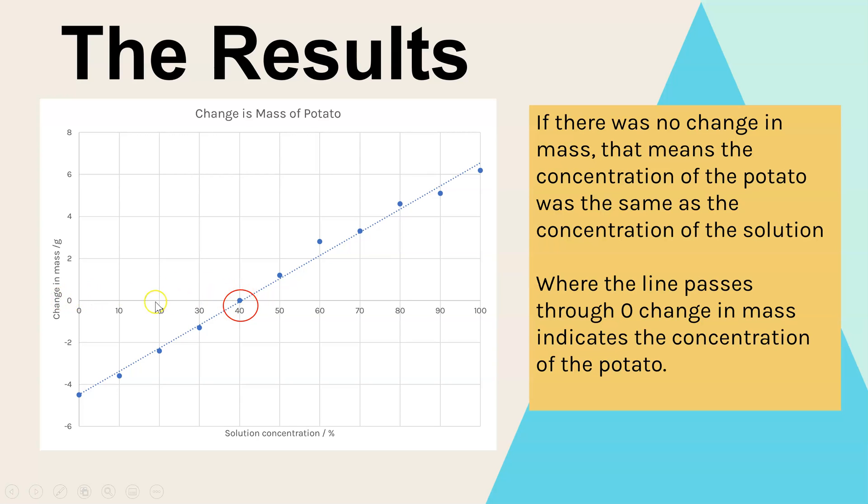Because where our line intercepts zero on the y-axis, which I've circled here, that means that there was no change in mass. So no water was moving in or out of the potato. And that must be because the solution the potato was in is exactly the same concentration as the potato itself. So in this example, that would mean that the potato's concentration was 40%. Now, we haven't got what the solution itself was, but that is a really common question. So you're looking at where there's zero change in mass. That is what the concentration of your plant material is.